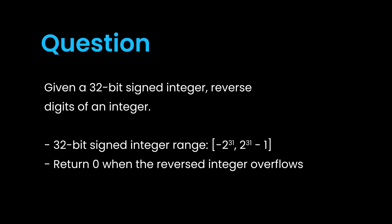Let's look at the question. Given a 32-bit signed integer, reverse the digits of that integer. The 32-bit signed integer ranges from negative 2 to the power of 31 to 2 to the power of 31 minus 1. Return 0 if the reversed integer overflows. We'll look at what the 32-bit signed integer means in a bit, but first let's look at some examples.